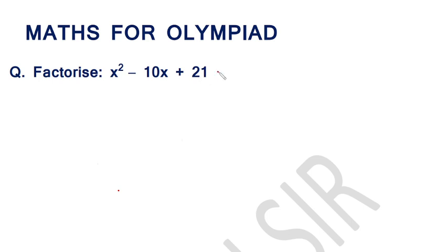Recall this identity: (x - a)(x - b) is equal to x² - (a + b)x + ab.